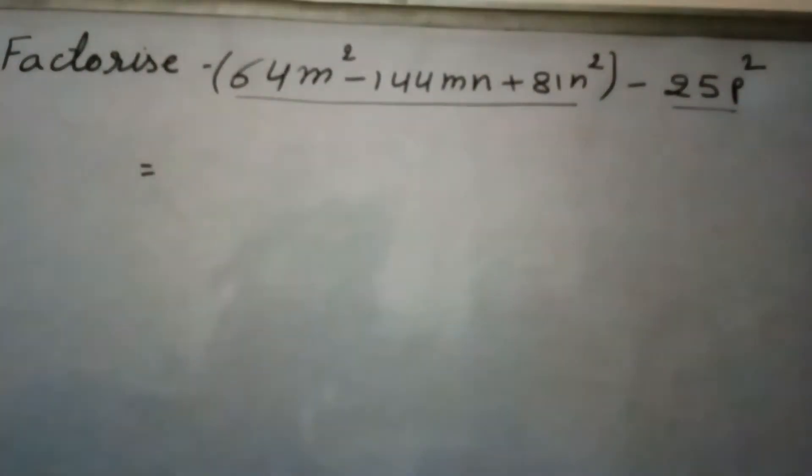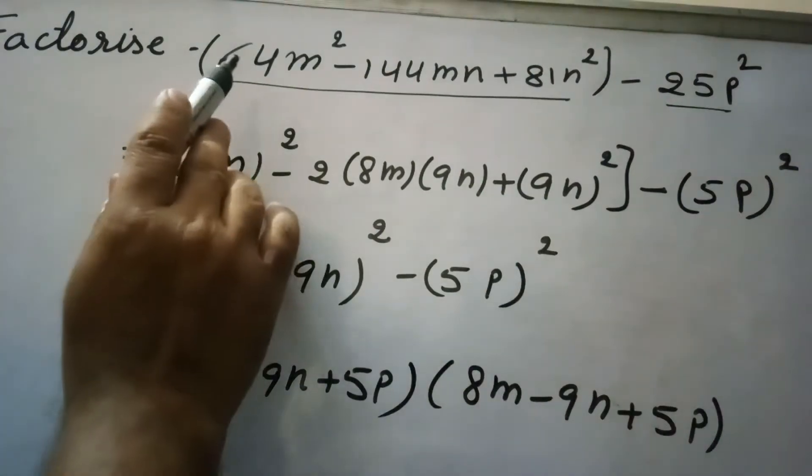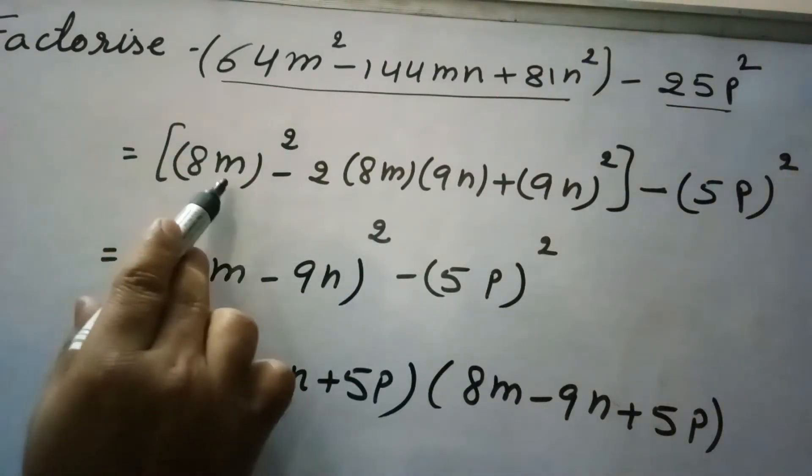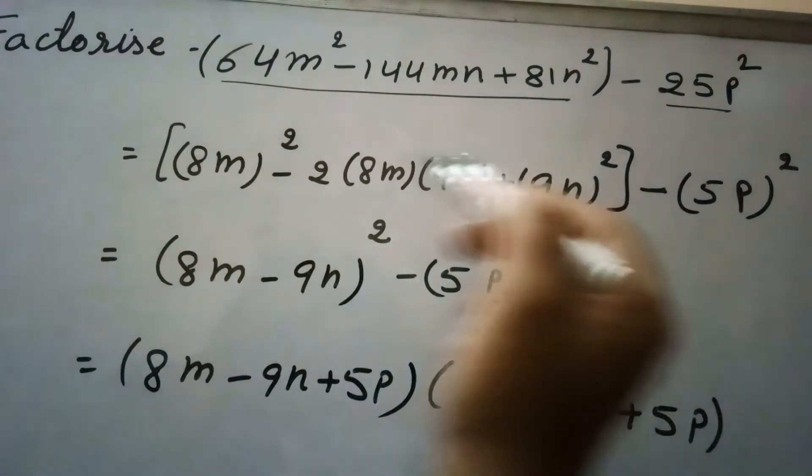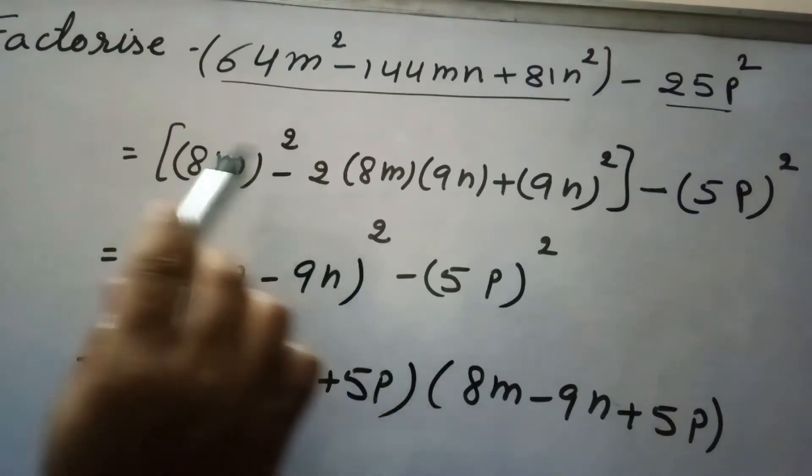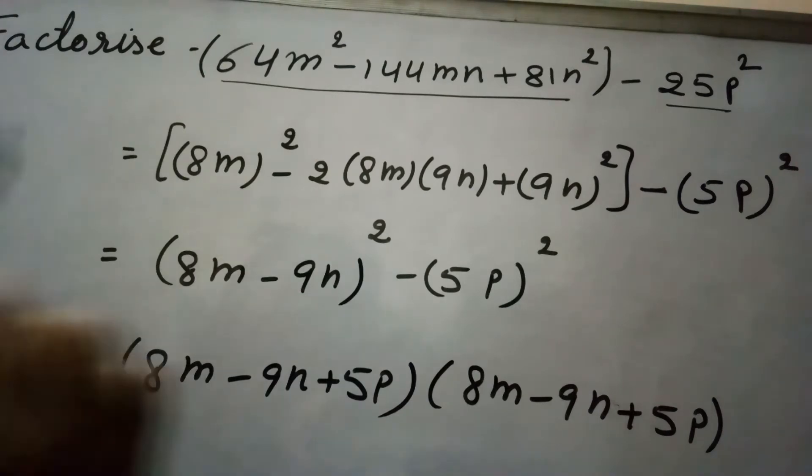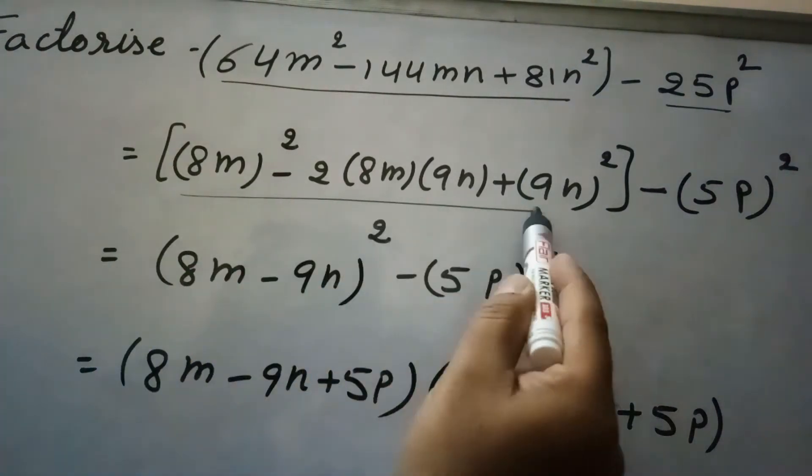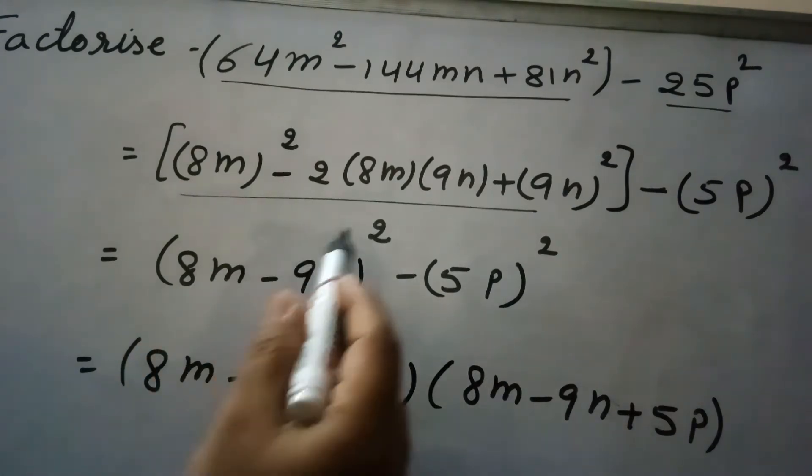So 64m² can be written as (8m)², 81n² can be written as (9n)², and this 144mn is the product of these terms: 2 × 8m × 9n. So here this becomes a² + b² - 2ab, which equals (a - b)². So this becomes (8m - 9n)² minus 5p squared, which will remain as is.